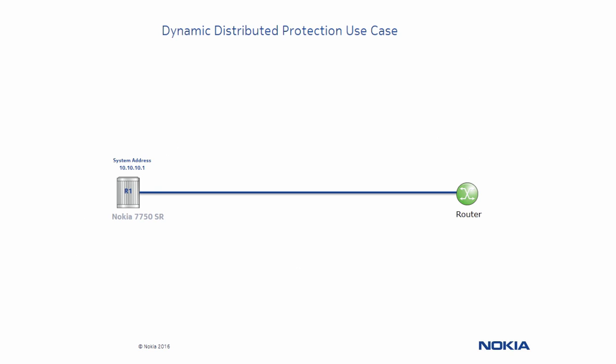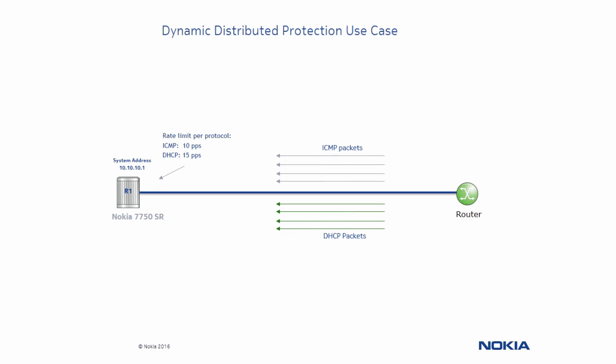In our second use case, we want our distributed CPU protection to be dynamic. We will have a local monitoring policy that applies a dynamic policy from a pool once the overall control plane traffic has reached 20 packets per second. Once the policy is applied, it will rate limit DHCP packets to 15 packets per second and ICMP packets to 10 packets per second. Let's begin our exercise.